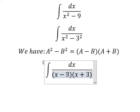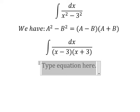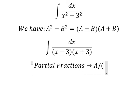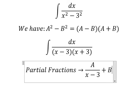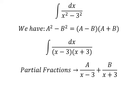And now we can use about partial fractions. So I will put A over x minus number three, B over x plus number three. Now we do common denominator.